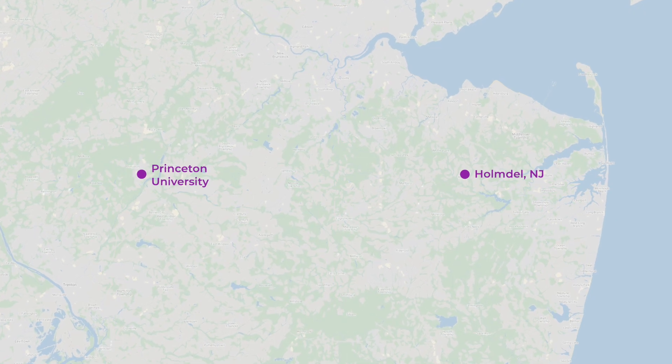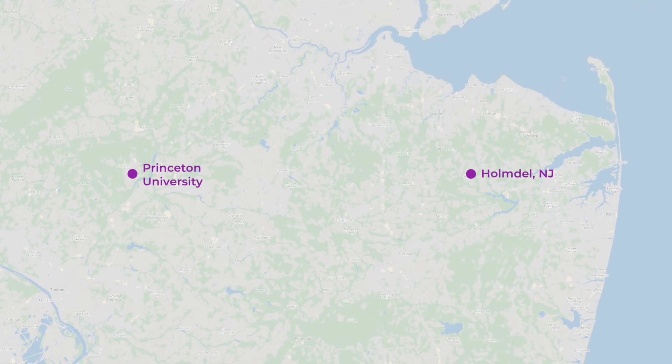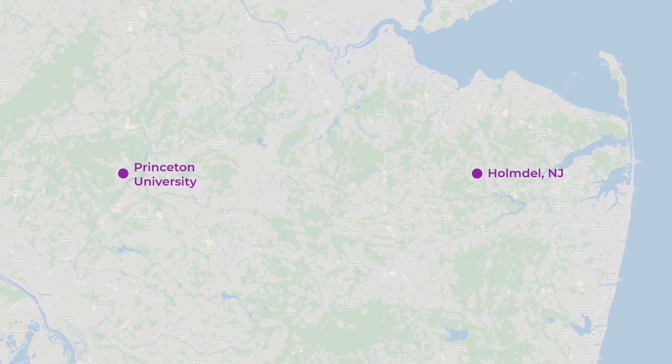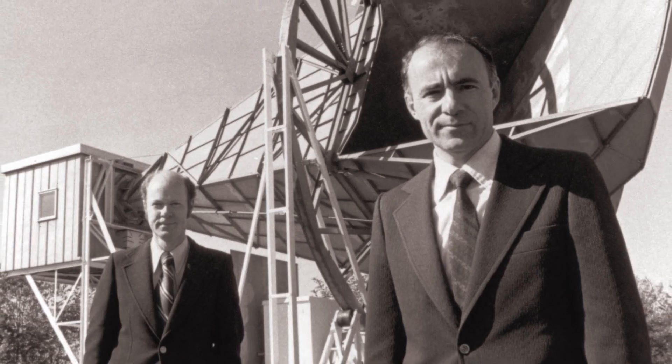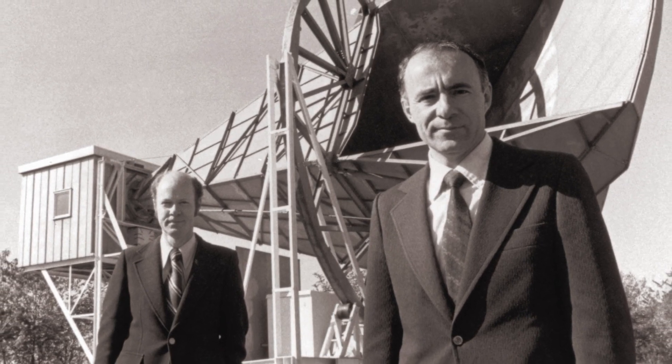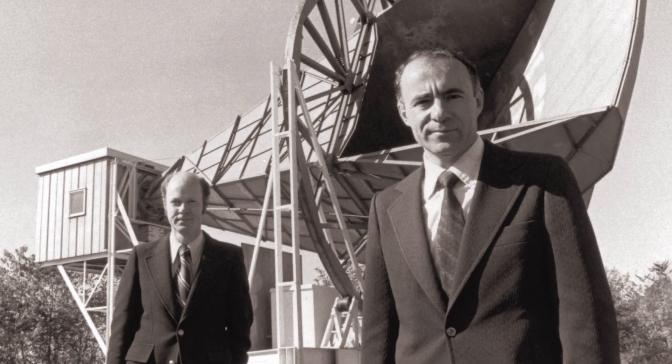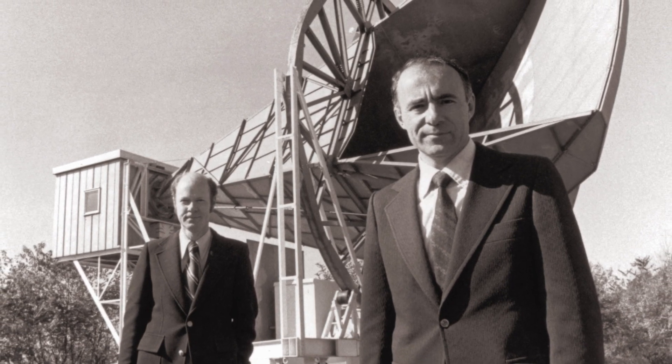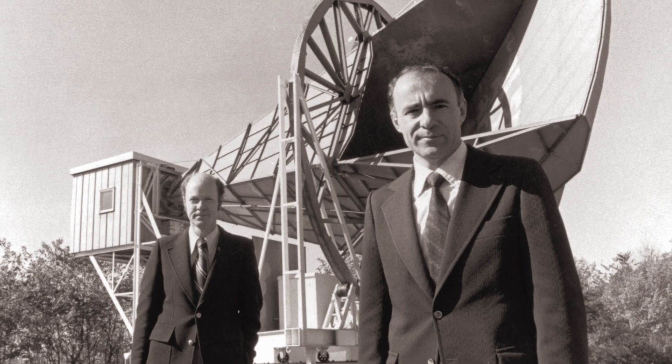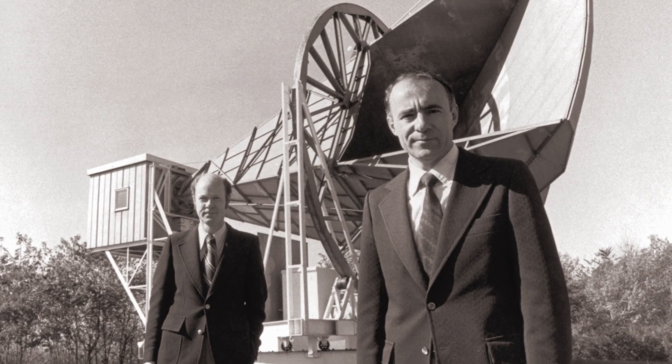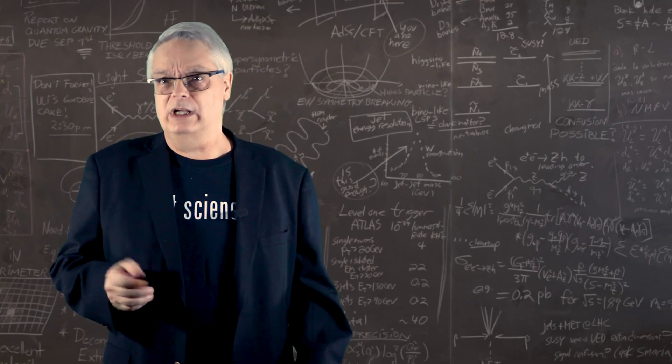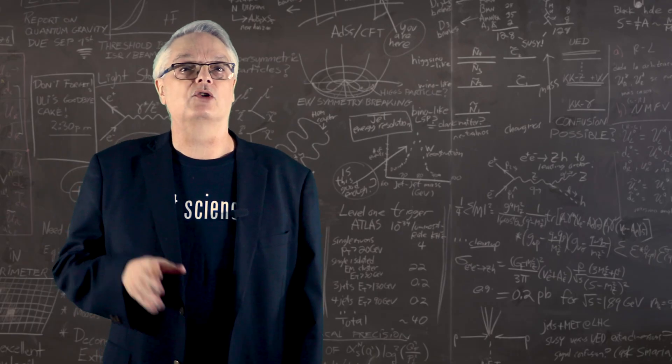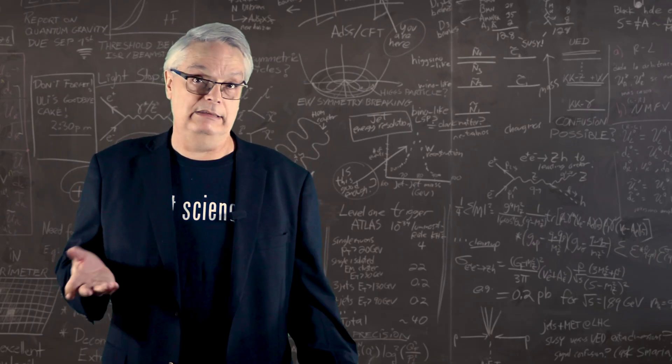About 30 miles east of Princeton lays the town of Holmdel, New Jersey, home of Bell Laboratory, where Arno Penzias and Robert Wilson worked. They were using a radio telescope to try to get a precise measurement of a supernova remnant in the constellation Cassiopeia. To make sure their measurement had no unwanted signal, they pointed their telescope in empty space expecting to detect nothing.